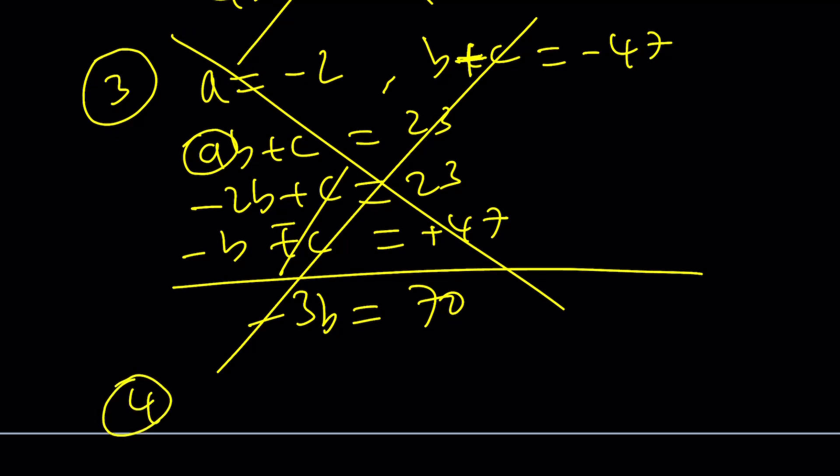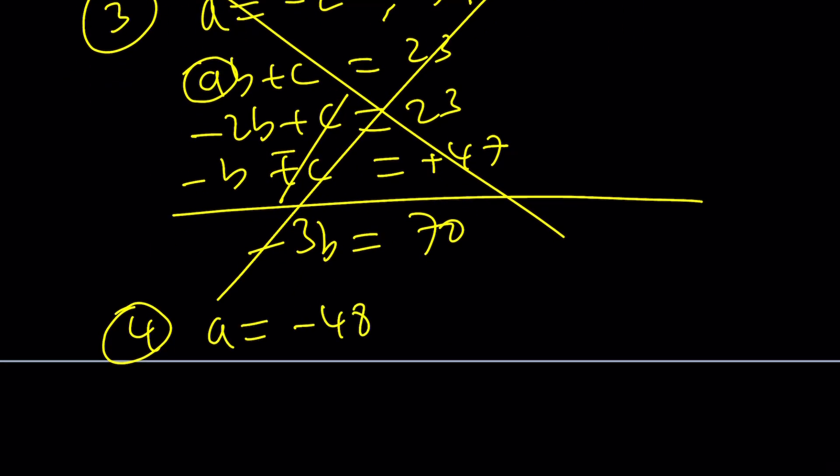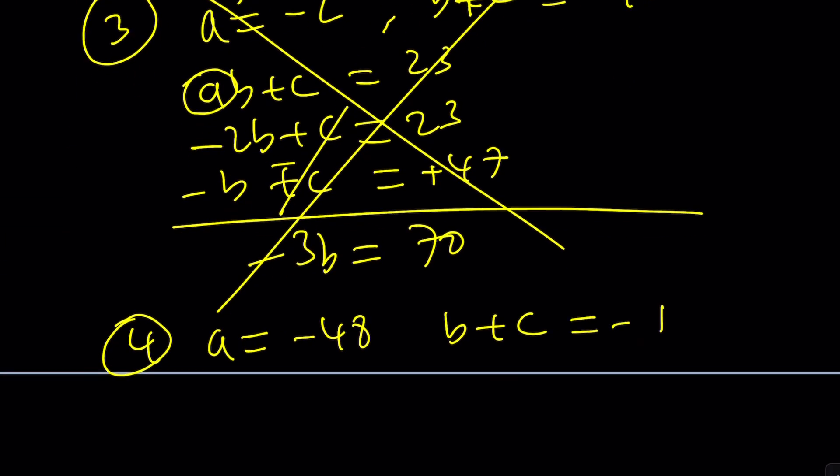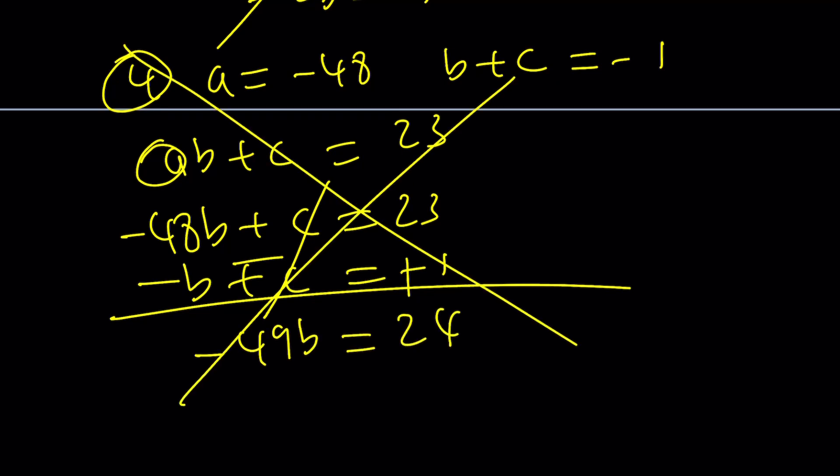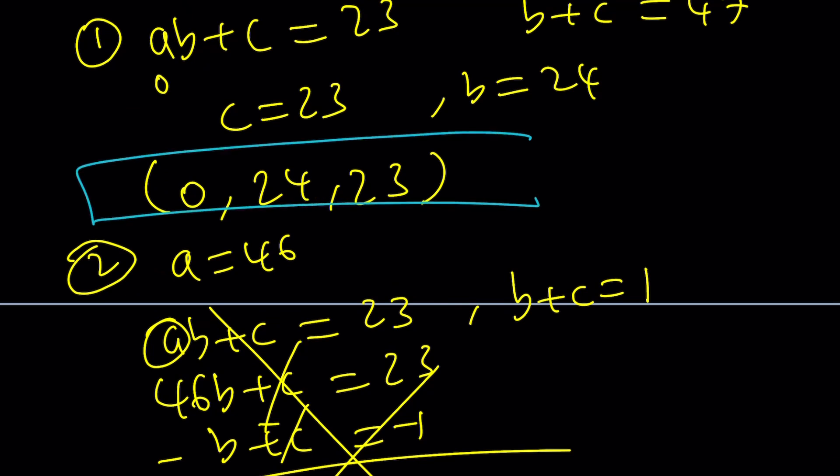Let's look at the last case. Last case number four is A is negative 48. And B plus C is, I think, negative 1. B plus C is negative 1, yes. And we also know that AB plus C is 23. Now if you go ahead and plug in negative 48 here, you're going to get another system like this. And then again, negating the second equation. C cancels out, negative 49B equals 24. We don't get any integer solutions either. So the only triple we get or triplet, whatever you want to call it, is going to be this one, the only solution to our system. Alrighty. This is the first method.